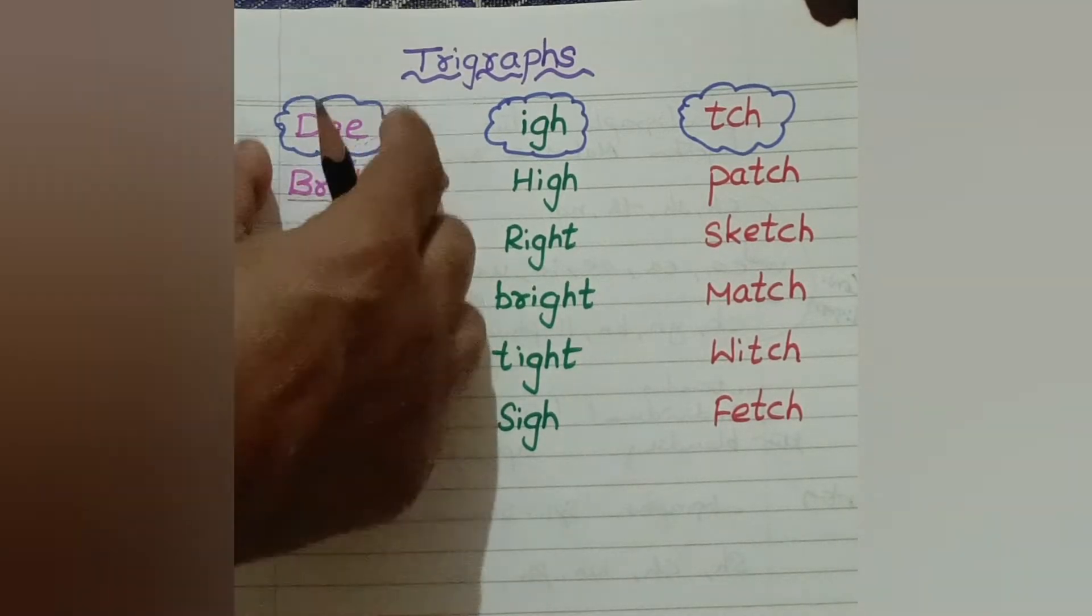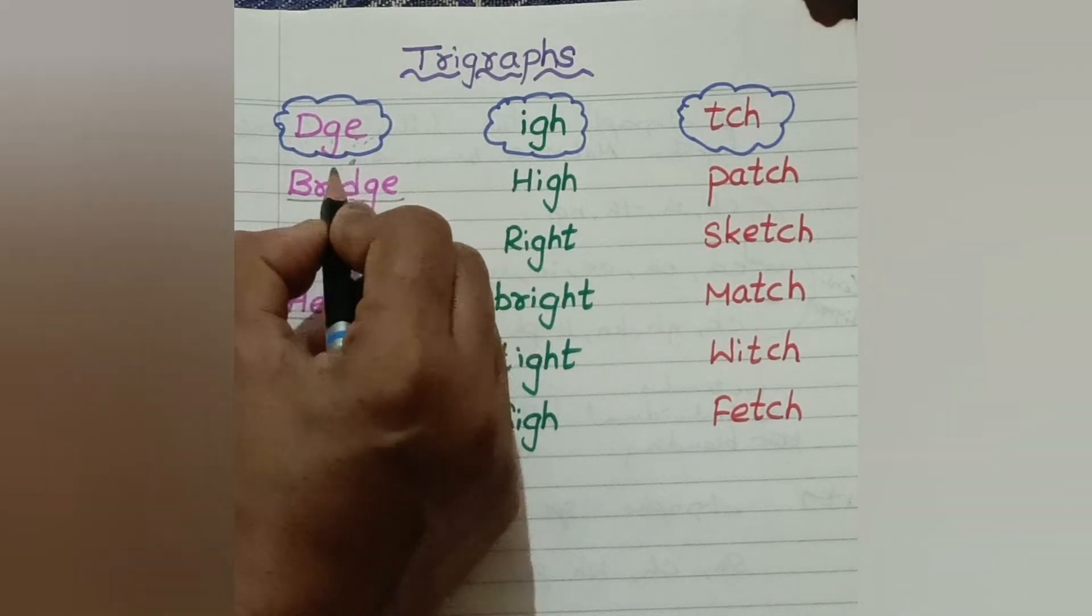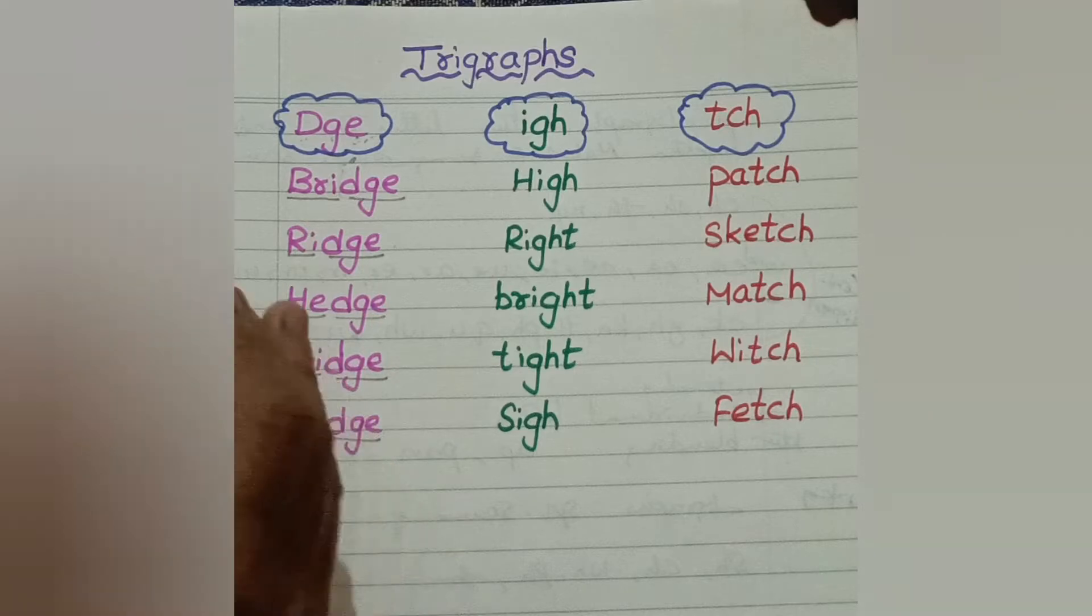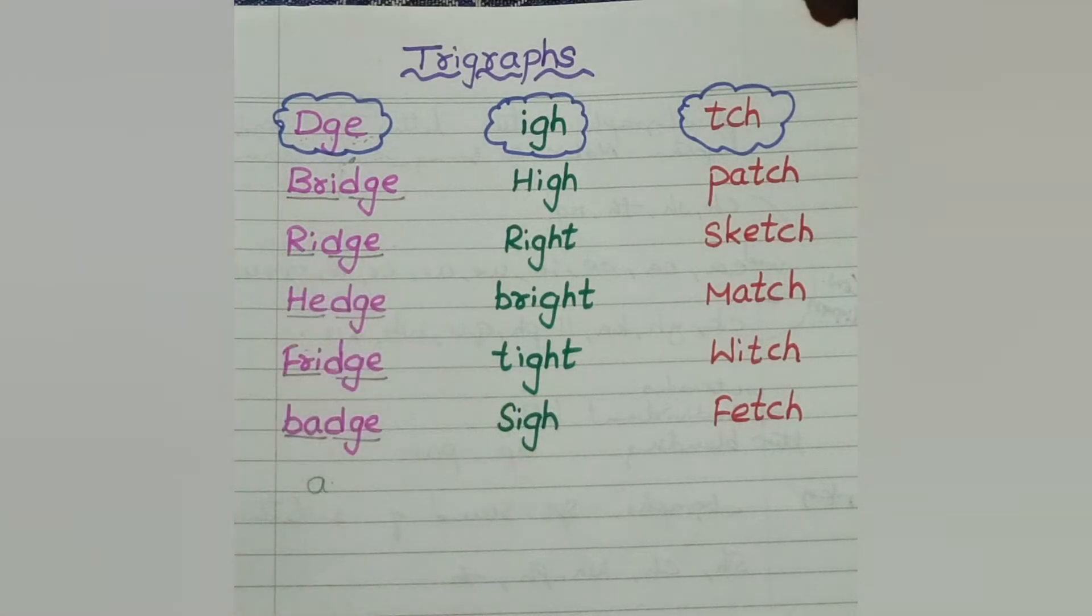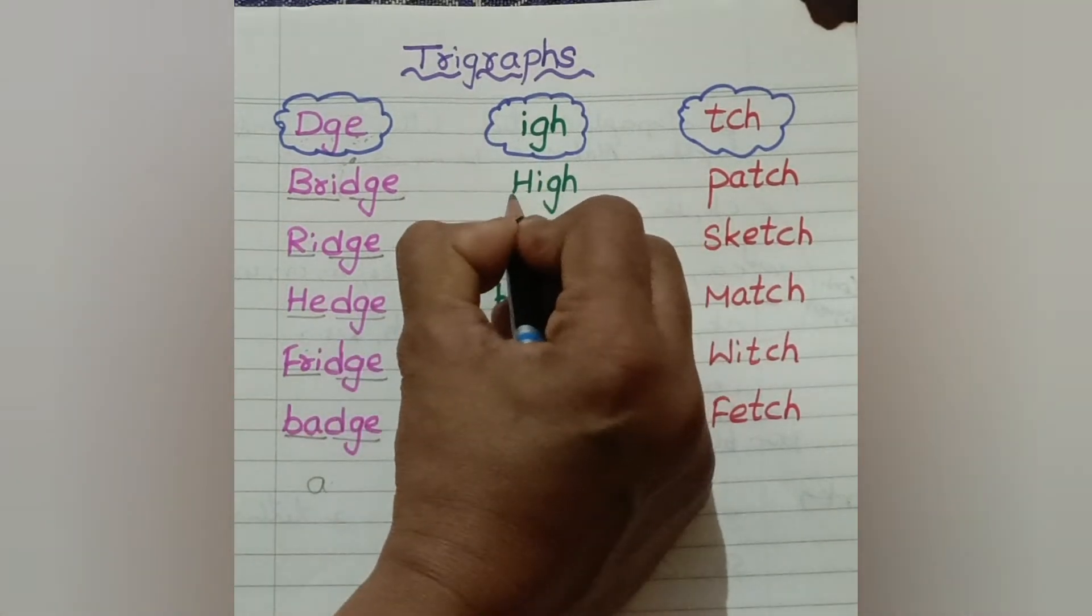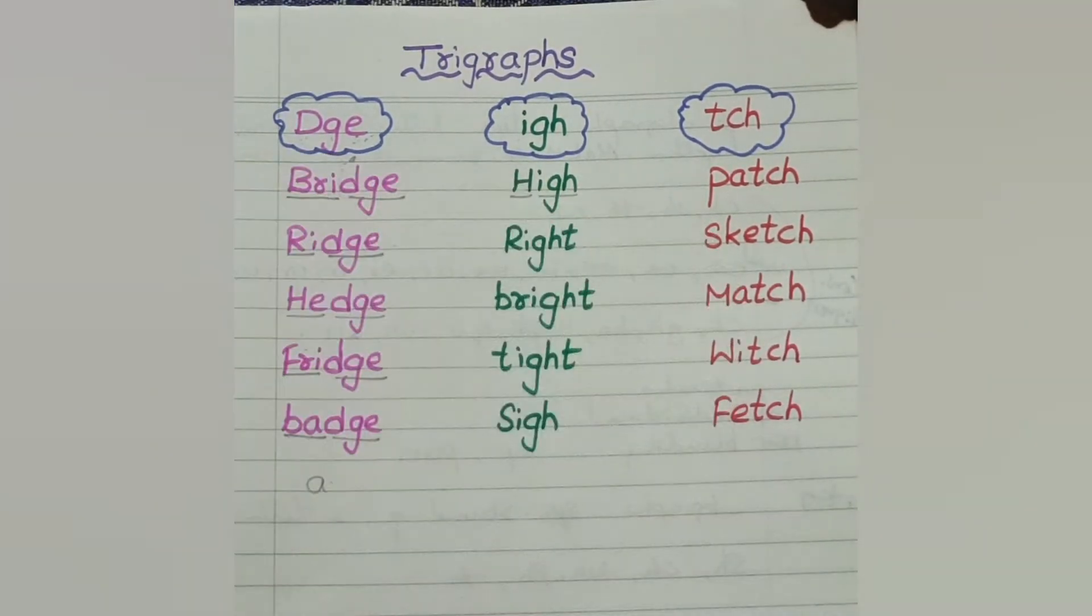So these are the words of dge. Now we can teach the child these three letters together: I, G, H makes the sound I, high.